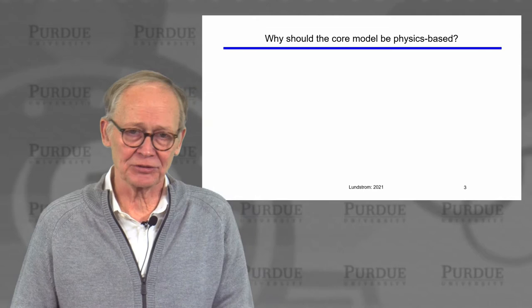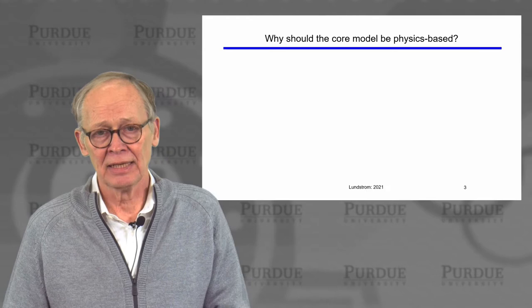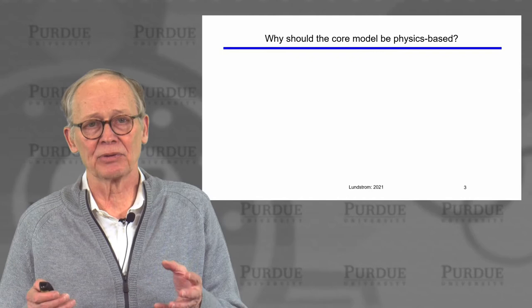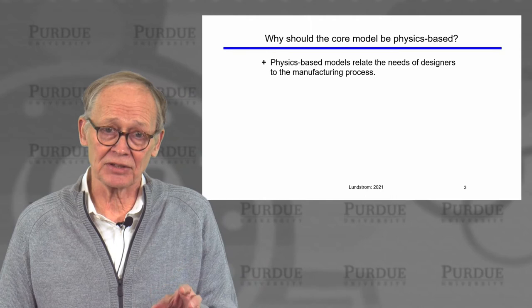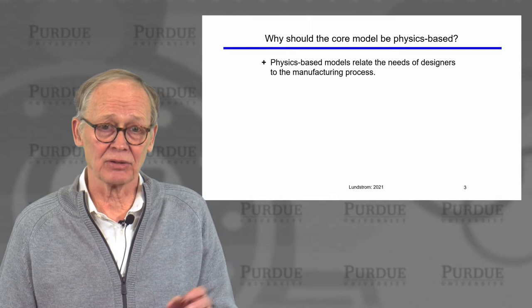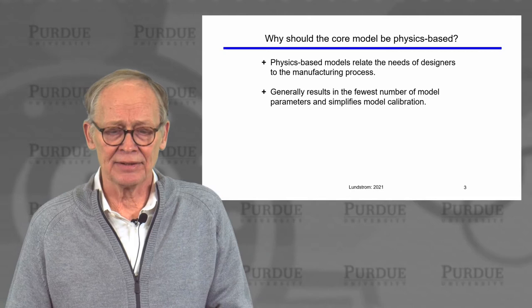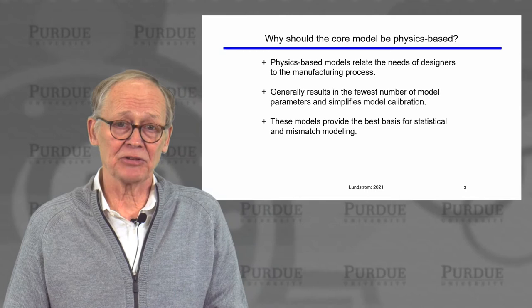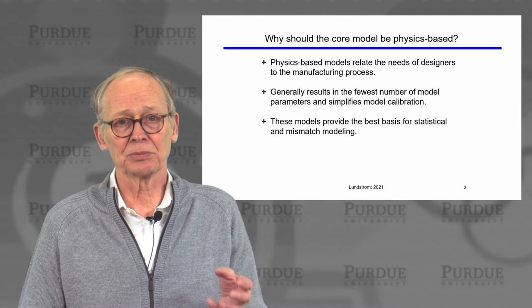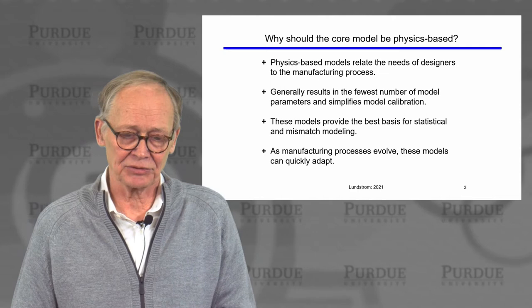You might ask why the core model needs to be physics-based. Why not just generate a table of IV data, or take a high-degree polynomial and fit its parameters to measured data? Well, there are several reasons people prefer the core model to be physics-based. One is that it relates the needs of the designer to the manufacturing process itself — we speak the same language: oxide thicknesses, channel lengths, and things like that. These kinds of models generally result in the fewest number of model parameters, making it easier to calibrate the model to the specific manufacturing process. It also provides the best basis for statistical modeling because we know the statistical variation of various parts of the manufacturing process and can relate that back to the effect on the transistor.